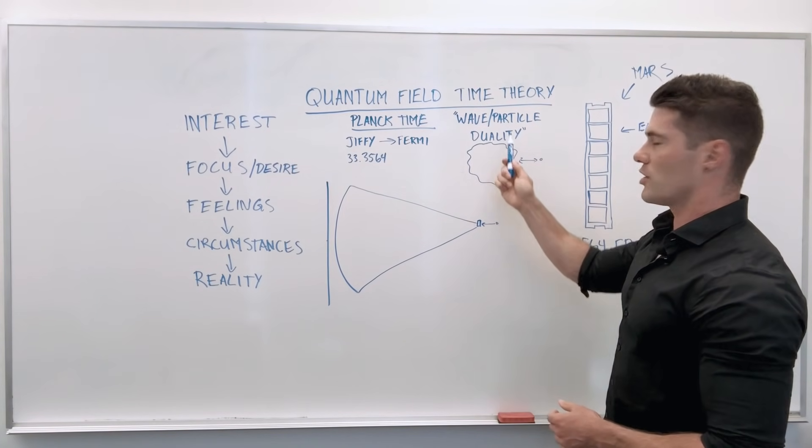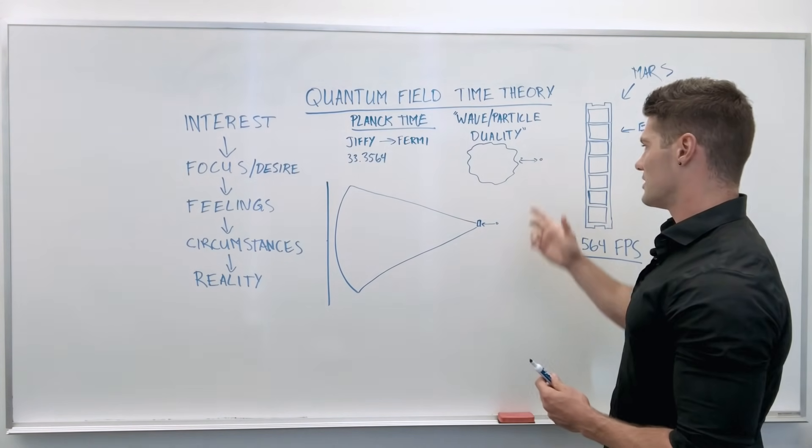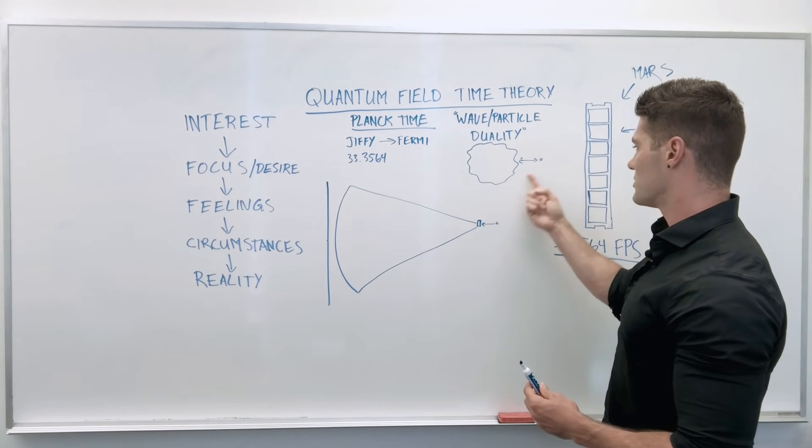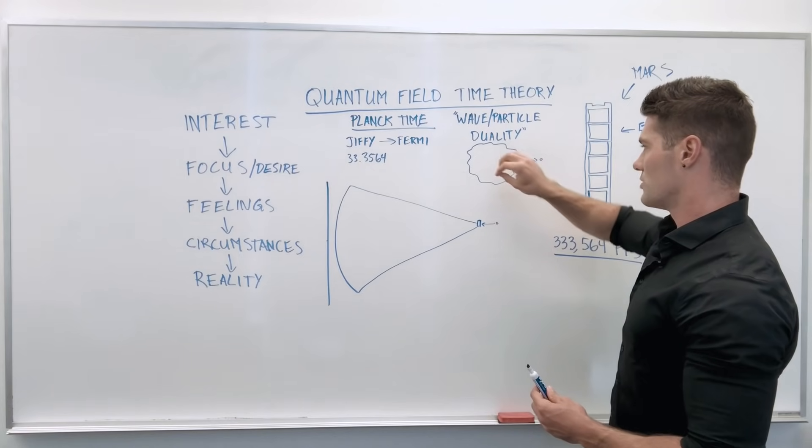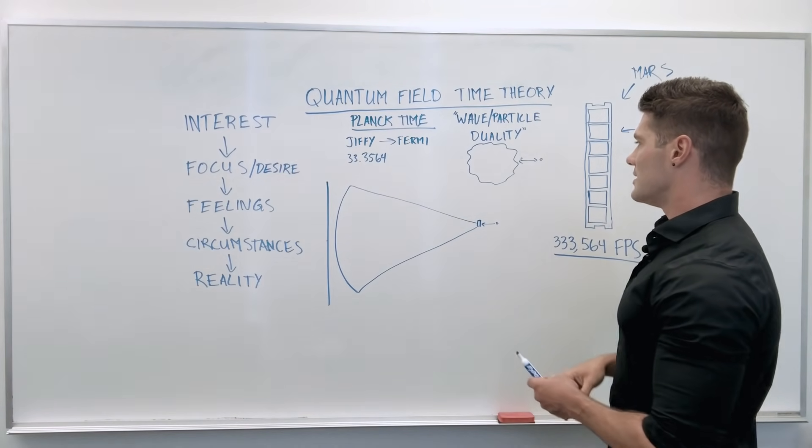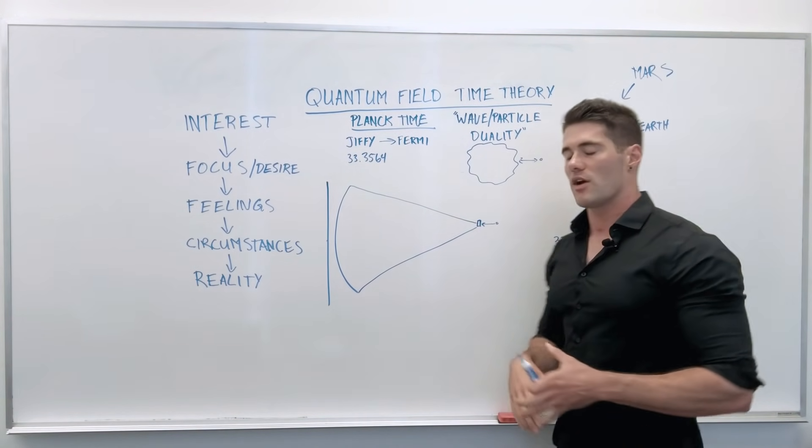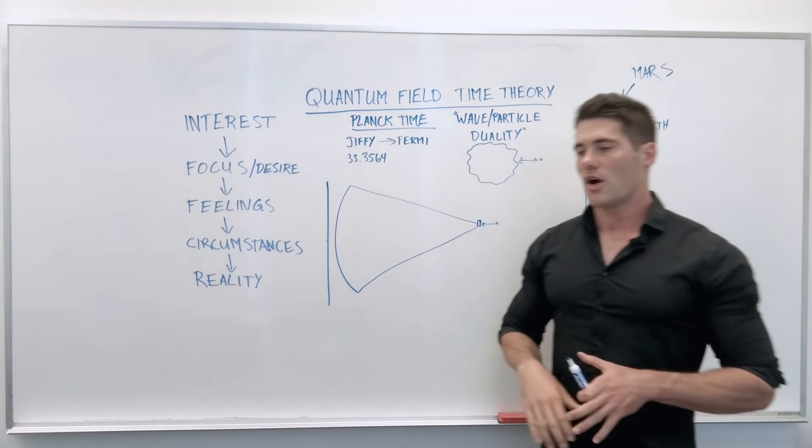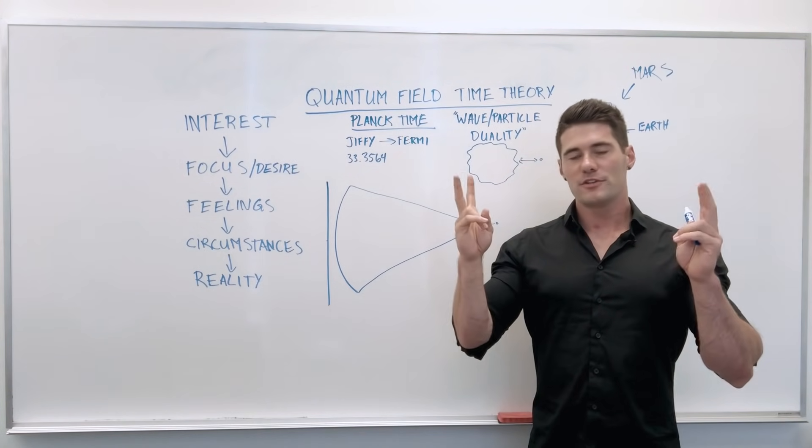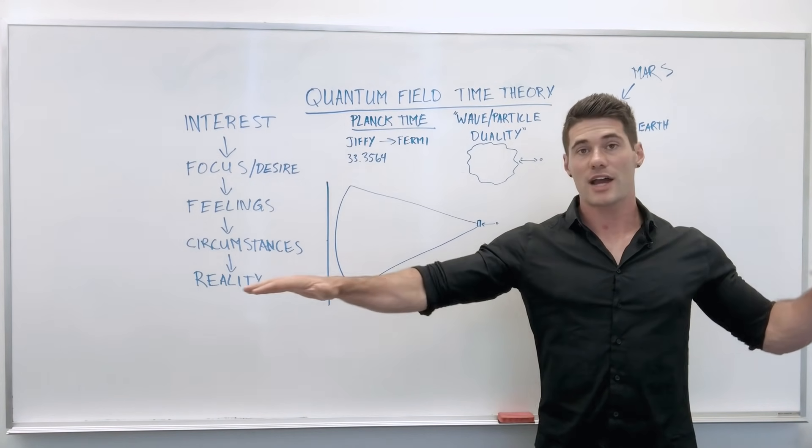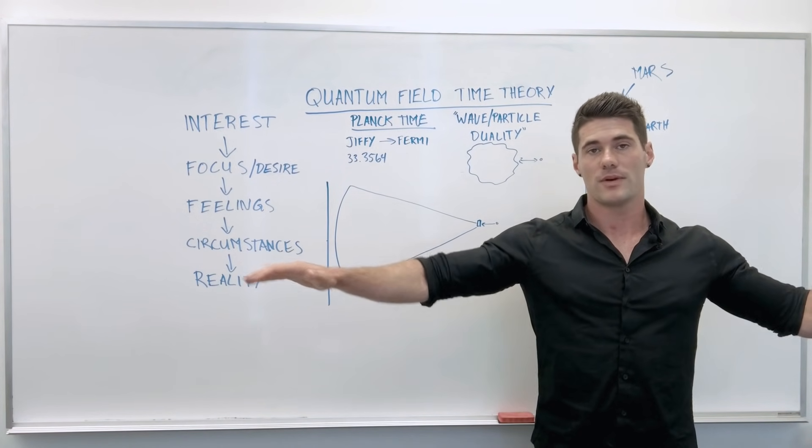This is called wave-particle duality, which means particles exist in two forms simultaneously, as particles and as waves or a cloud. These waves, or what they call fields, are, according to theoretical physicists, fluid-like substances that expand across the entire universe for infinity.